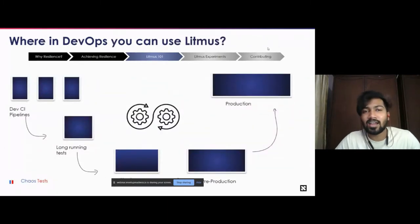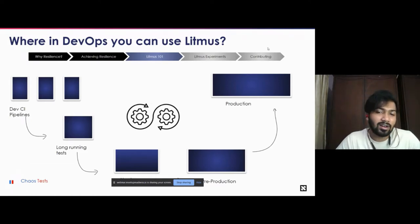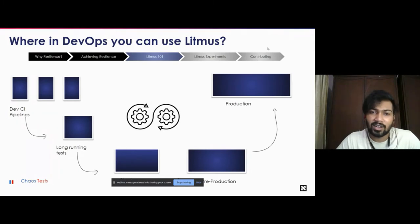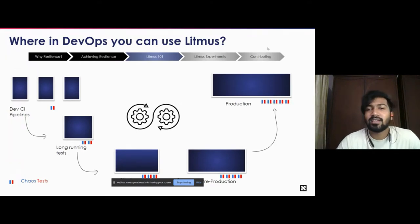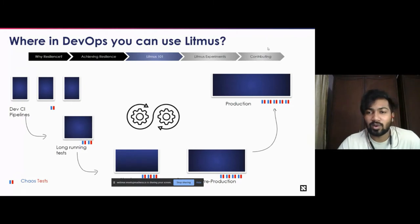In the DevOps cycle you can use Litmus in your dev CI pipelines, staging, pre-production, production, and developer clusters. You can run chaos everywhere. Chaos engineering is something people believe is a luxury, but it's a necessity today. I'd love to invite folks to run chaos engineering tests with Litmus anywhere and everywhere to make their systems resilient.